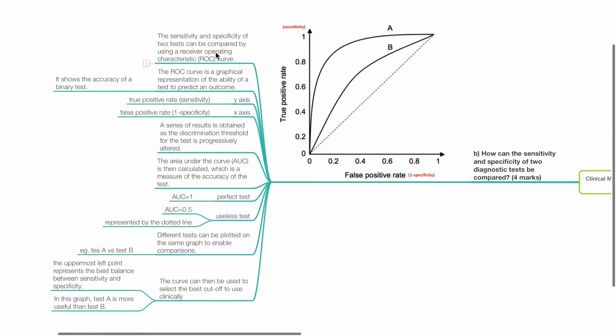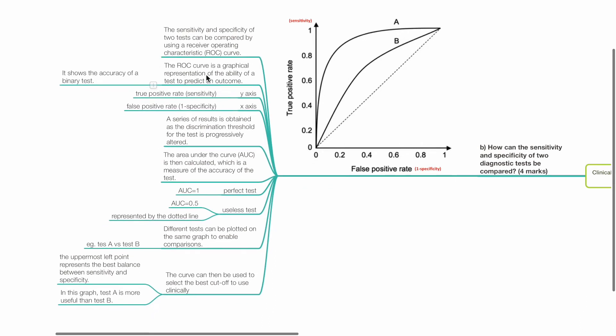The sensitivity and specificity of two tests can be compared by using a receiver operating characteristic curve, ROC curve. The ROC curve is a graphical representation of the ability of a test to predict an outcome. It shows the accuracy of a binary test.